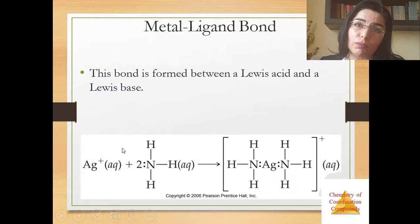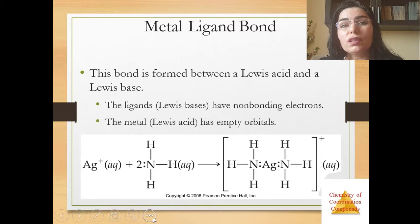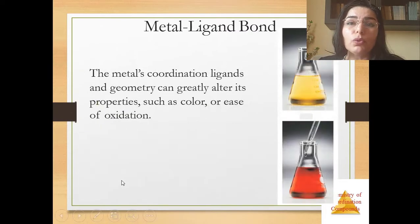Now about metal ligand bond. This bond is formed between a Lewis acid and a Lewis base. The ligand species have non-bonding electrons and the metal is Lewis acid, it has empty orbitals. In this example of argentium-ammonia complex, the metals, ligands, and geometry can greatly alter its properties such as color or ease of oxidation.